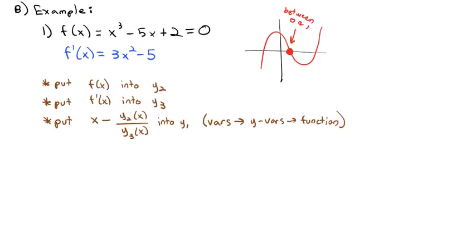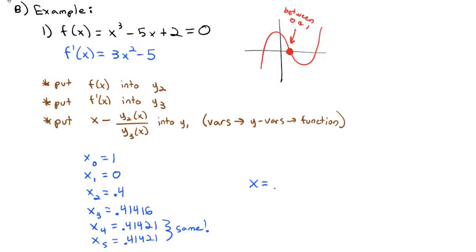So I'm going to come back to my whiteboard here and I'm going to summarize those results from the calculator. Just to summarize, we started with x0, our first guess was at 1. That gave us our next guess which was at 0. Our next guess the calculator gave us was 0.4. Our next guess was 0.41416. Our next guess was 0.41421. And then when we plugged that in we again got 0.41421. And when we get the same thing, then we say that our solution is exactly that: x equals 0.41421 is the solution that exists between 0 and 1.